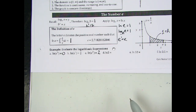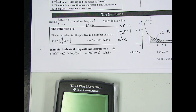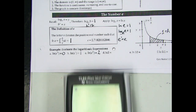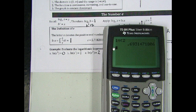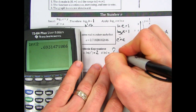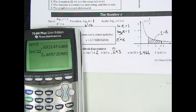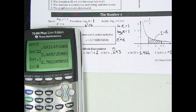For values that aren't simple powers of e, you turn to your calculator. For example, natural log of 2 is approximately 0.693. Natural log of 32 is approximately 3.46. Natural log of 0.1 gives a negative number. Try natural log of 0 — it's not in the domain.